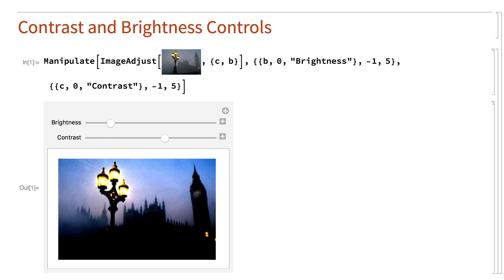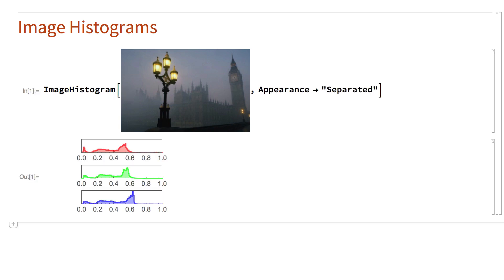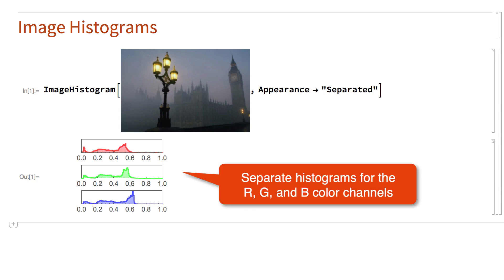A useful tool for describing brightness and contrast is a plot called an Image Histogram, which is a histogram of the pixel values in an image. Here is a histogram for this image. This is an RGB image, so there are actually three histograms, one for each of the three colors. The Appearance Separated option is included here so that the three histograms are drawn separately, rather than layering them on top of each other in one histogram.